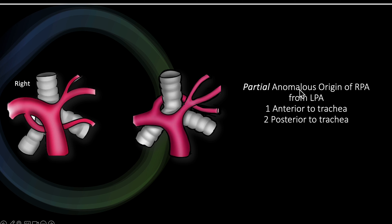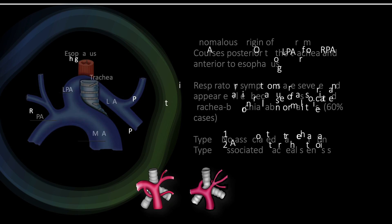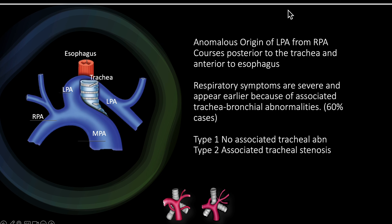The partial anomalous origin of the left pulmonary artery from the right pulmonary artery can go either anterior or posterior to the trachea. Commonly, we see anomalous origin of the left pulmonary artery from the right pulmonary artery: the entire left pulmonary artery, rather than coming from the main pulmonary artery, goes behind the trachea and comes from the right pulmonary artery. This is something very important as it forms a vascular ring.